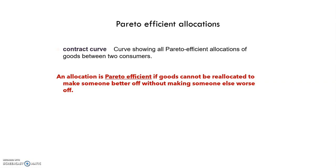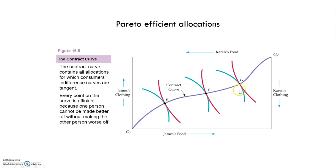We have another new concept: the contract curve. The contract curve shows all Pareto efficient allocations of goods between two consumers. It is drawn here as the purple line. This contract curve shows all the allocations that are efficient — points E, F, and G. In all these points on the purple line, we find that the marginal rate of substitution of James and Karen are exactly the same, so their indifference curves are exactly tangent. Every point on the curve is efficient because one person cannot be made better off without making the other person worse off.